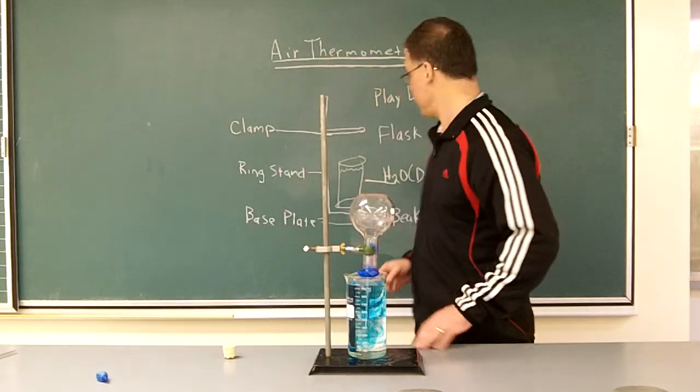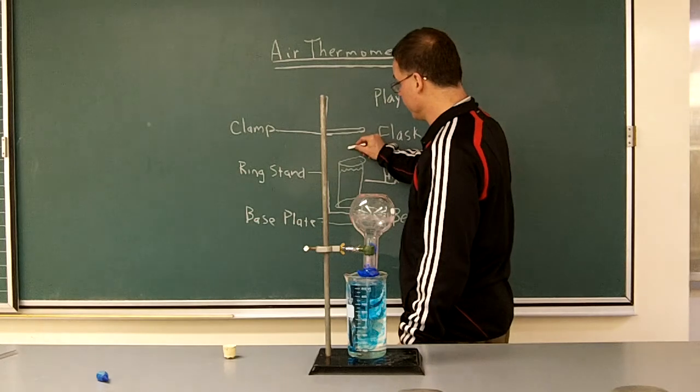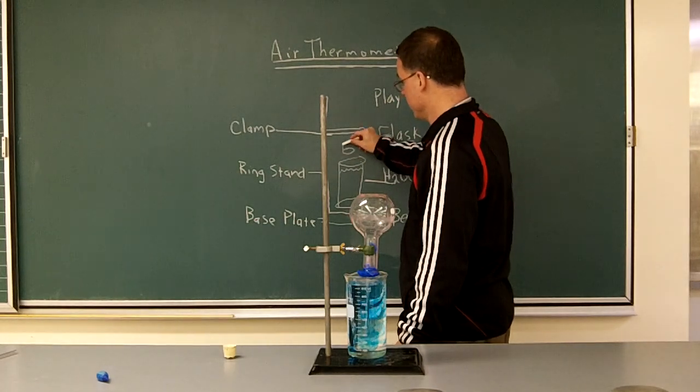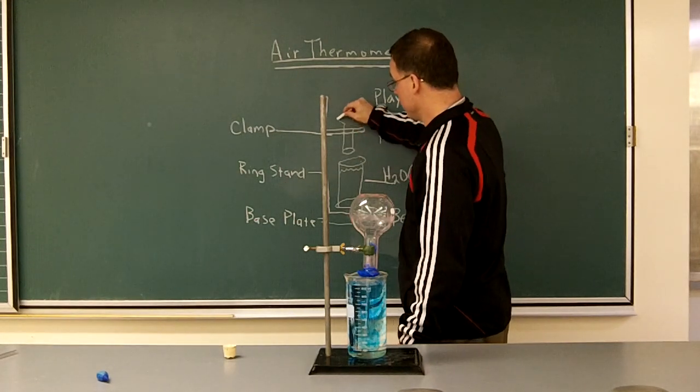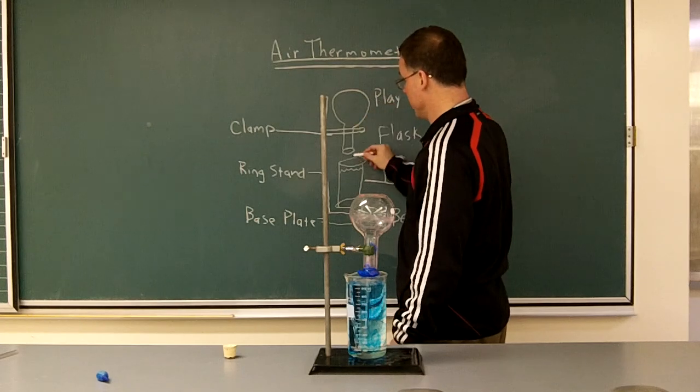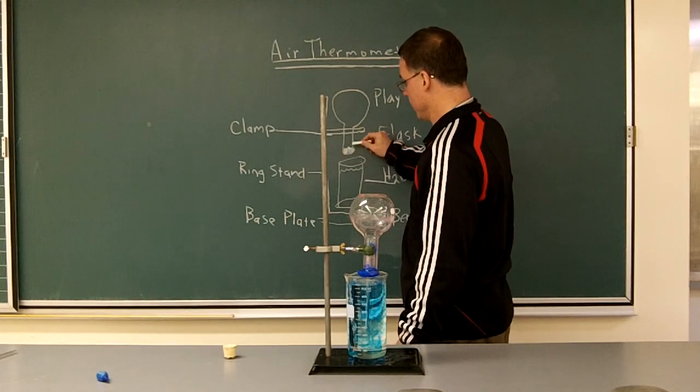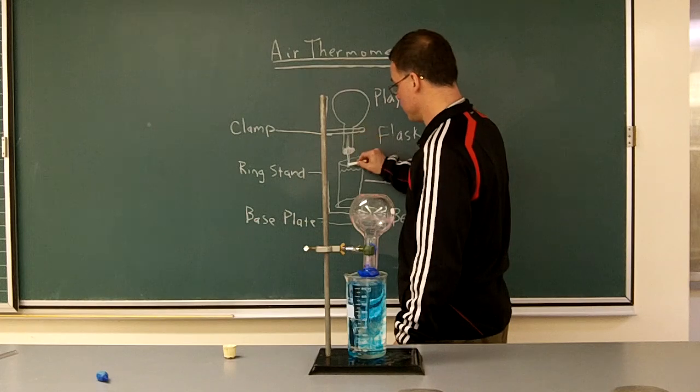Adding these items to the drawing, we have a flask with an open end here, with the neck of the flask, the ball part of the flask, the Play-Doh to be shaded in. And last but not least, a tube.